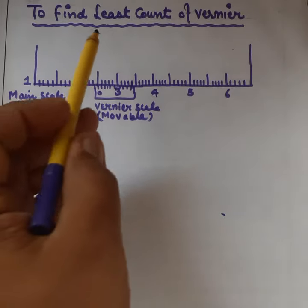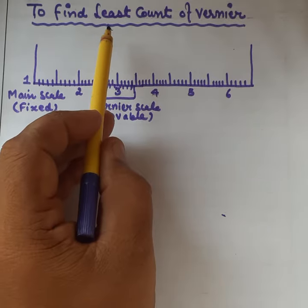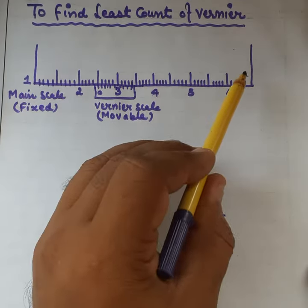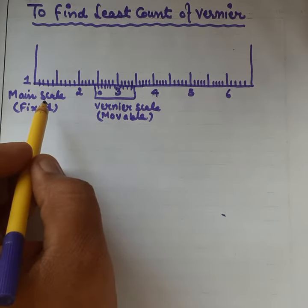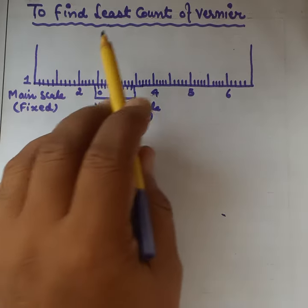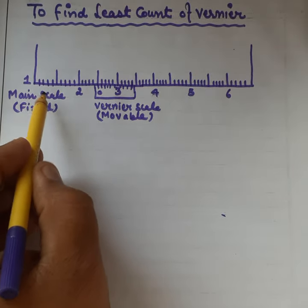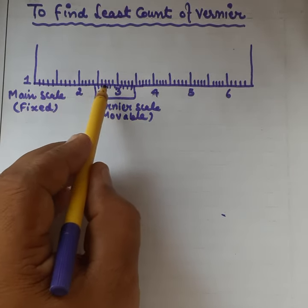How to find out the least count of a vernier. This is the vernier scale given, so now we are going to find out the least count of a vernier. We have two scales on the vernier scale.